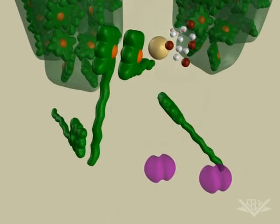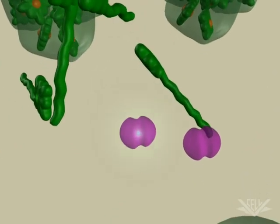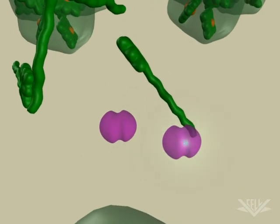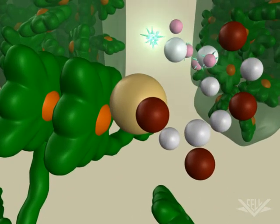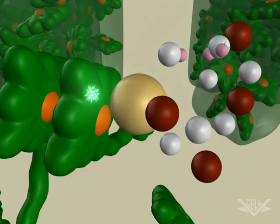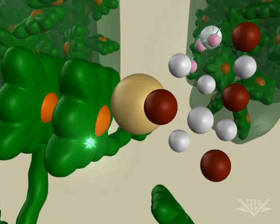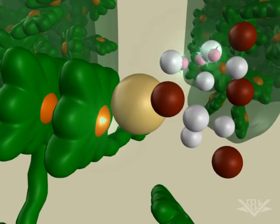An electron is lost from P680. It is then donated to QA, then to QB. The P680 molecules are then reduced by the addition of an electron generated by the splitting of water molecules at the oxygen-evolving complex.